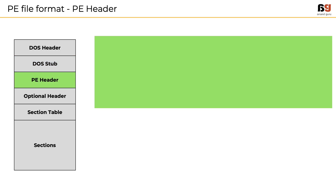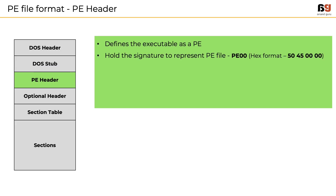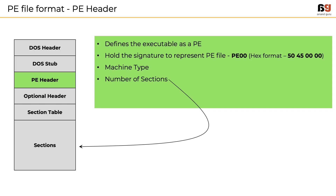After the DOS stub, we have the PE header, which is used to define the executable as a PE format. The signature to represent the PE file is PE00 in ASCII and 50450000 in hexadecimal. The PE header also holds the machine type the application is designed to run on, like 32-bit or 64-bit Intel or AMD chipsets. This part also contains information about the number of sections present in the file.